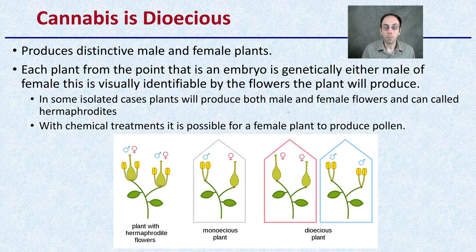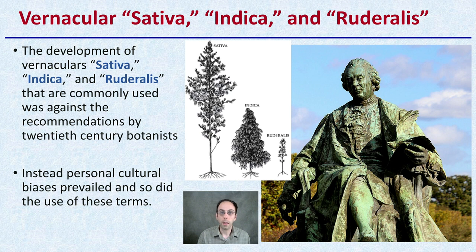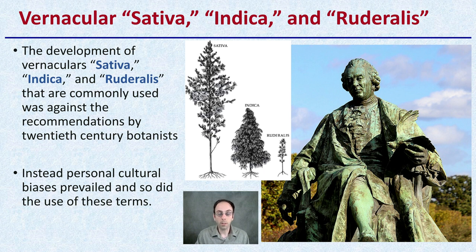Other plants may produce monoecious plants, meaning they produce male and female flowers on the same plant, but cannabis is not like that — it's distinctive male or female plants. Now, the vernacular terms sativas, indicas, and ruderalis that we might be familiar with are commonly used; however, their use is actually against the recommendations of 20th century botanists. Instead, personal and cultural biases prevailed, and so did the use of these terms. This is why they're so entrenched in cannabis culture even today.